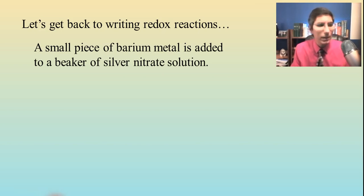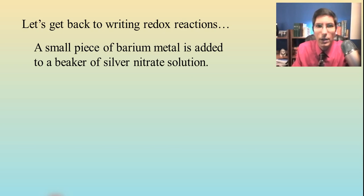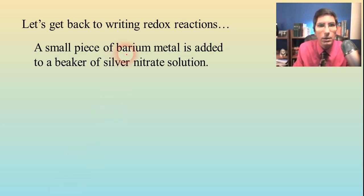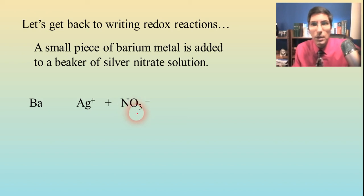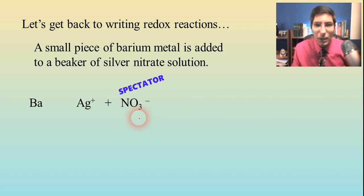We're going to take a small piece of barium metal and add that to a beaker of silver nitrate solution. In most redox reactions metals react with metal ions. Silver nitrate is a mixture of Ag⁺ and NO₃⁻. The nitrate is the odd one out — it's the anion that's not going to do anything. That is the spectator ion, so we're not going to worry about that in our overall net ionic equation.